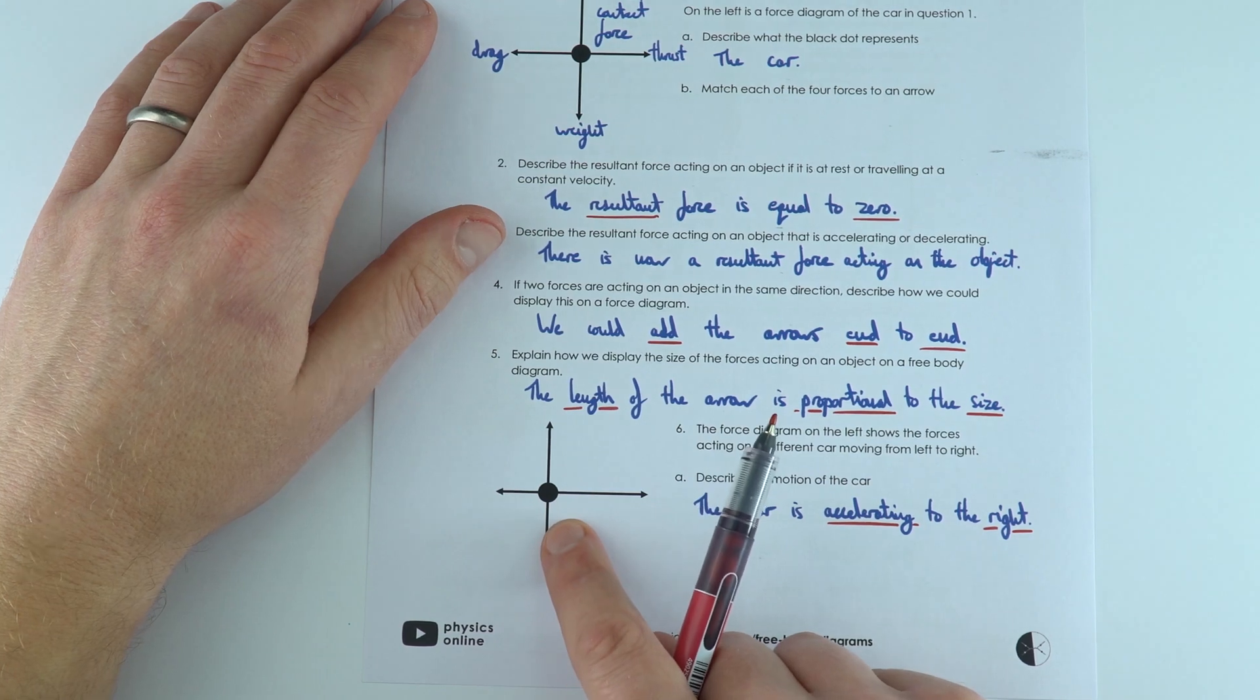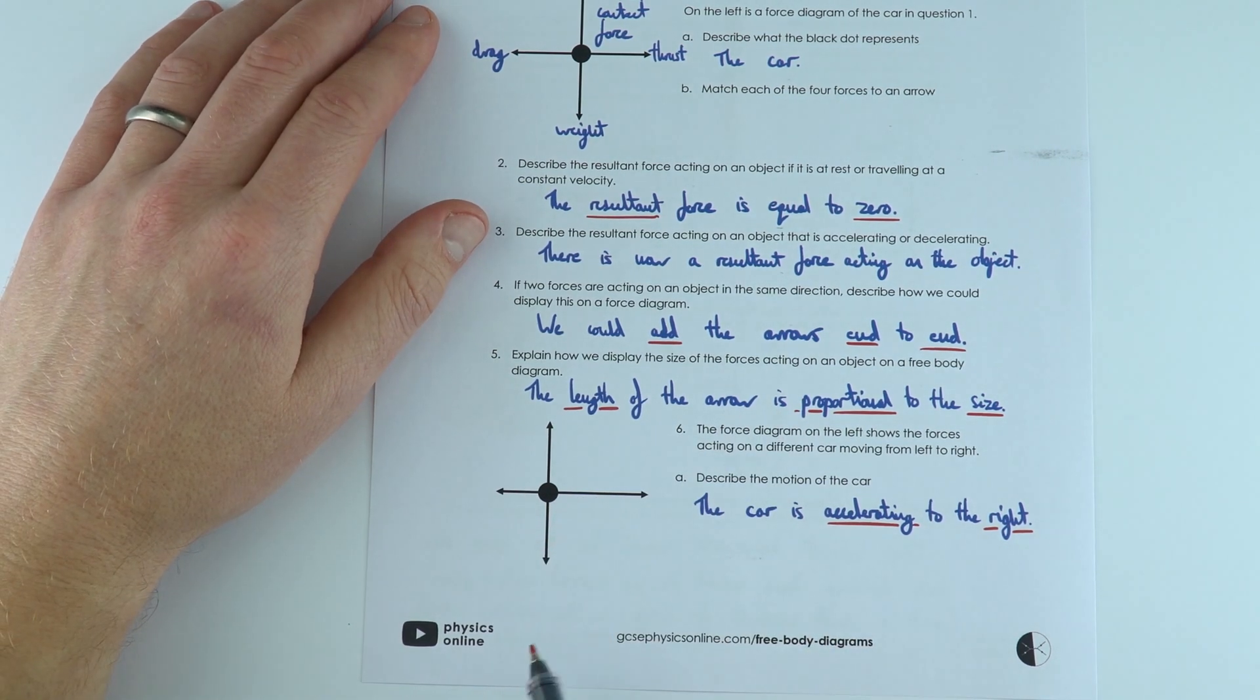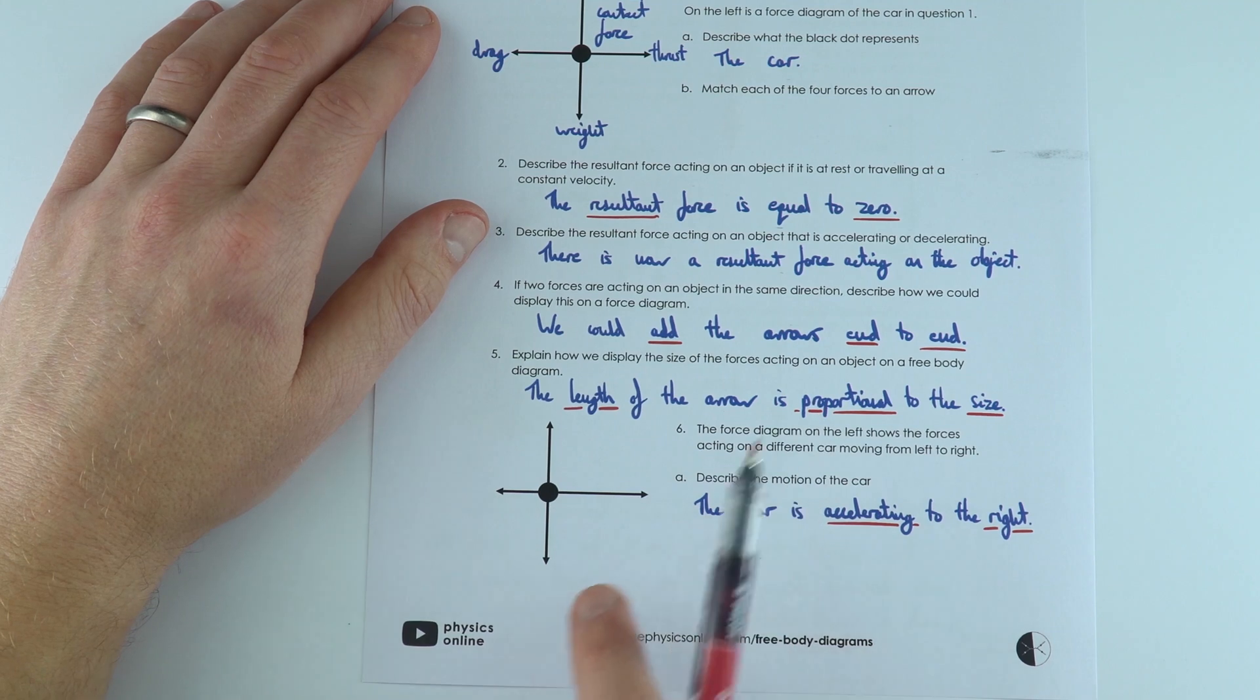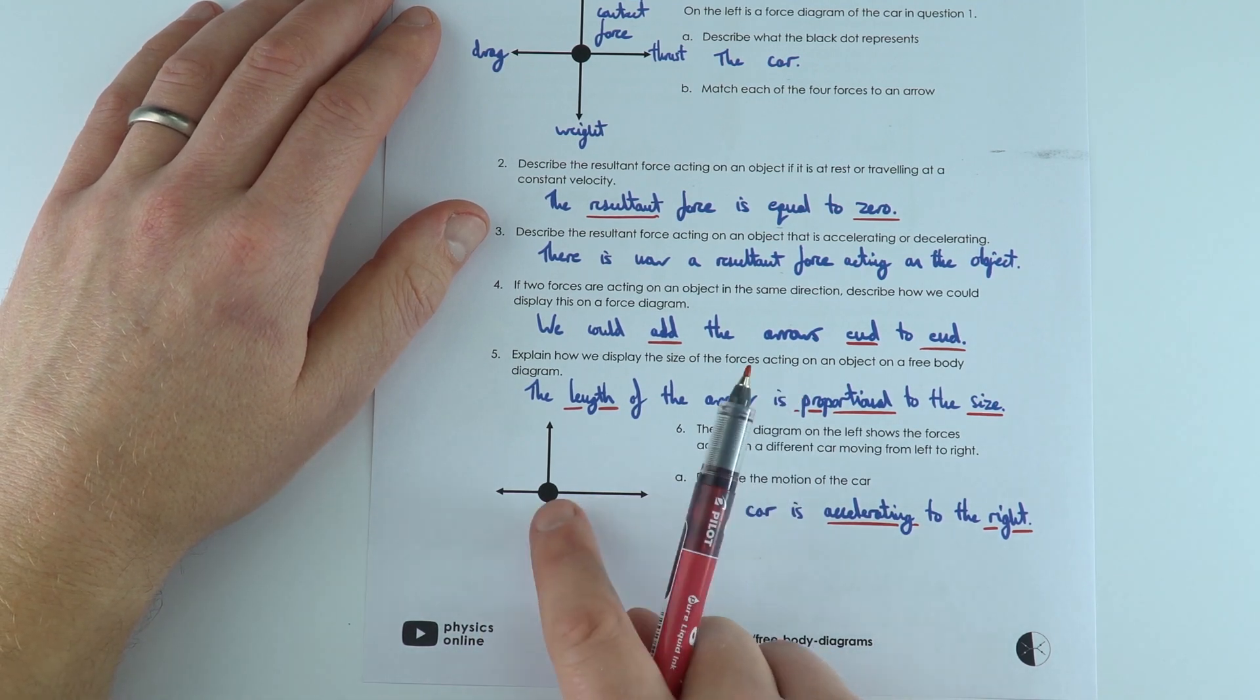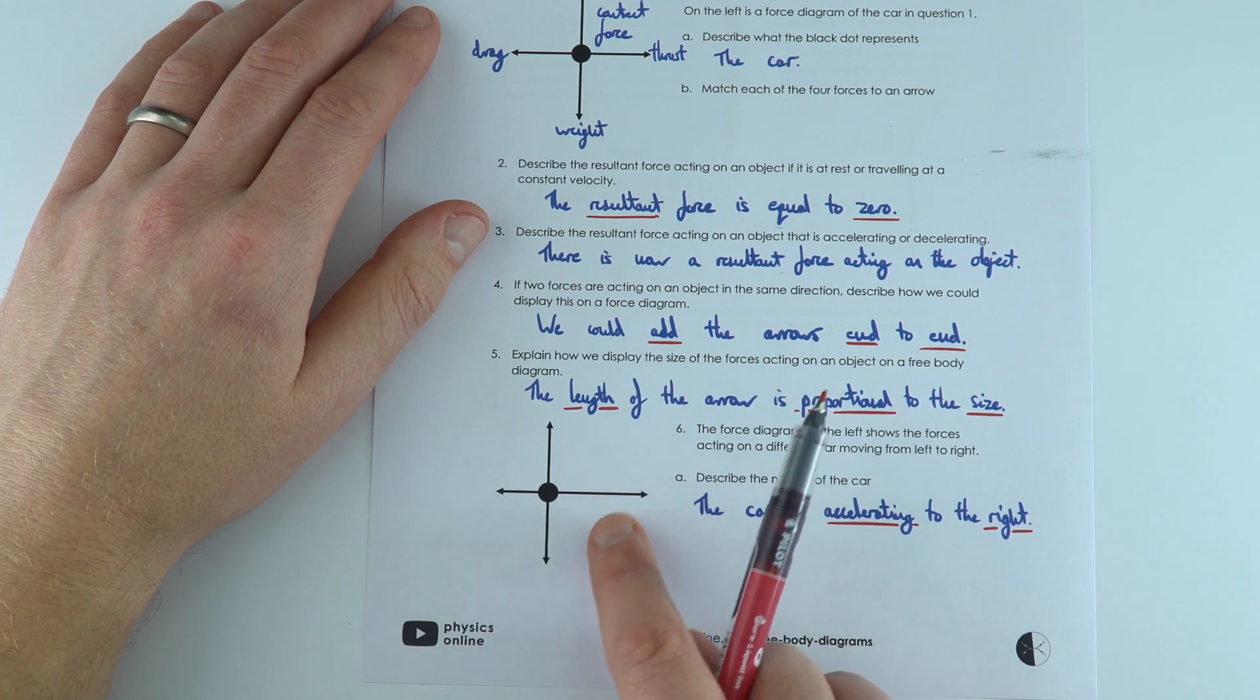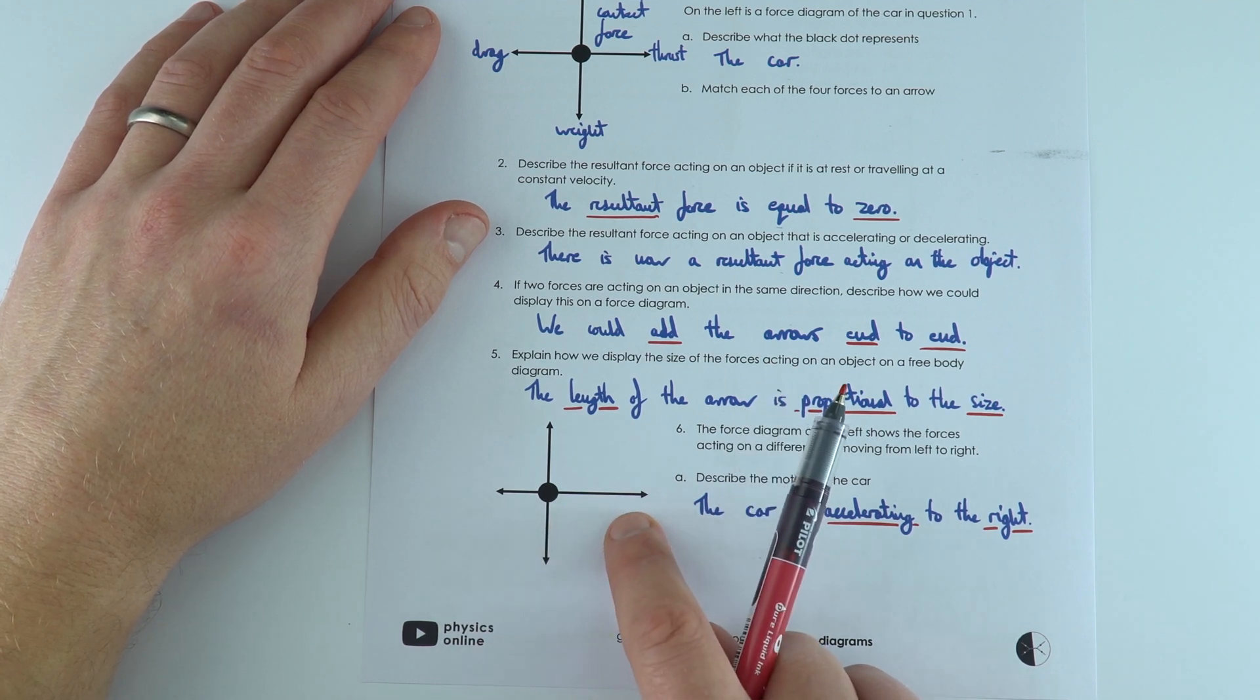Now this free body diagram down here, again it's just showing a car moving from left to right, and here the force to the right is bigger than the force to the left. That means there's going to be a resultant force to the right, and that means the car is accelerating to the right.